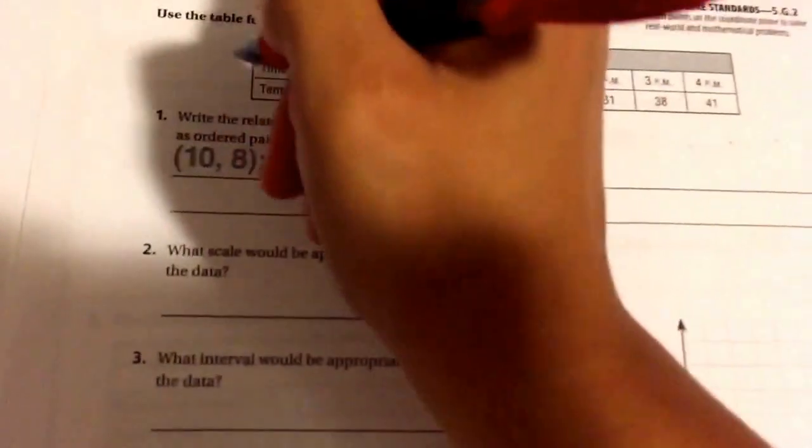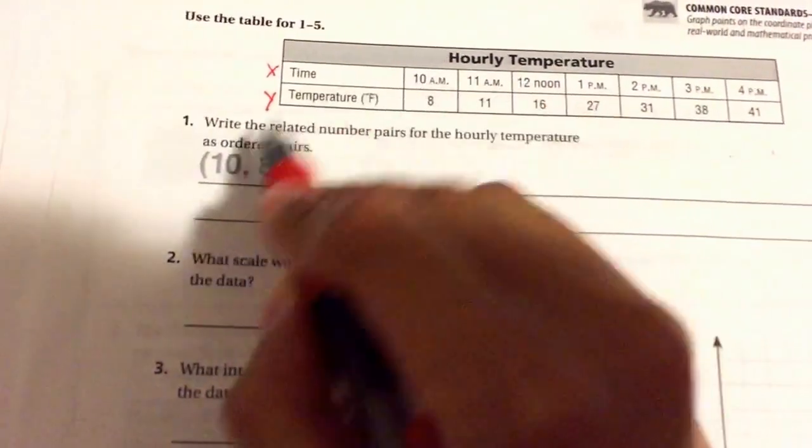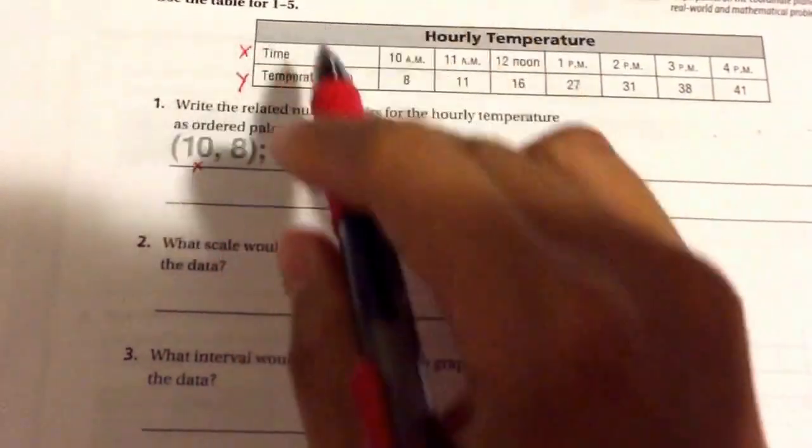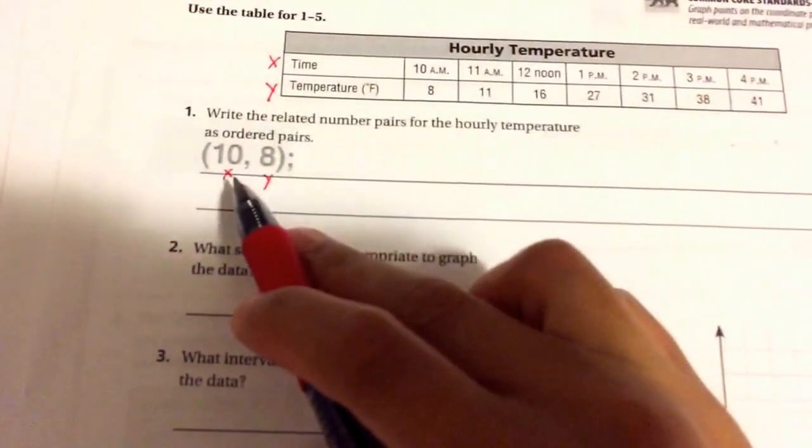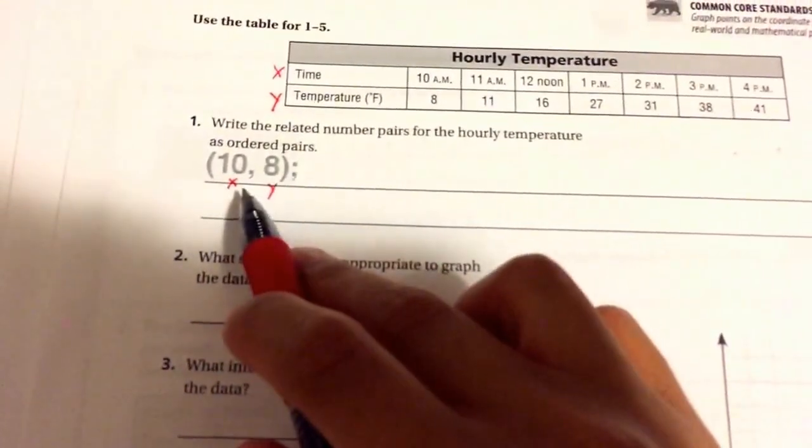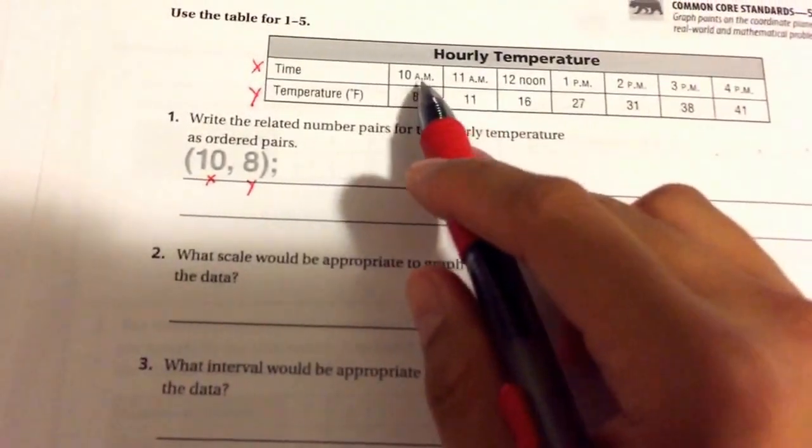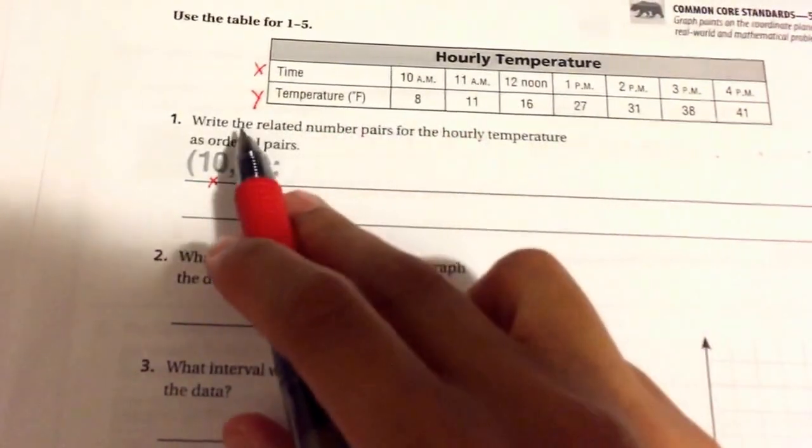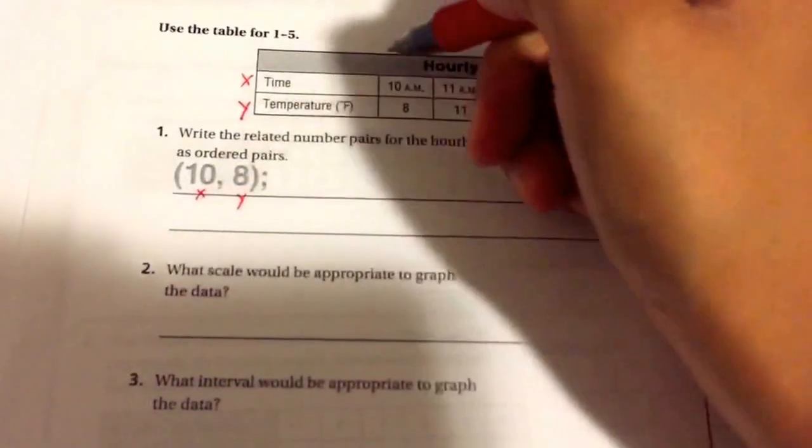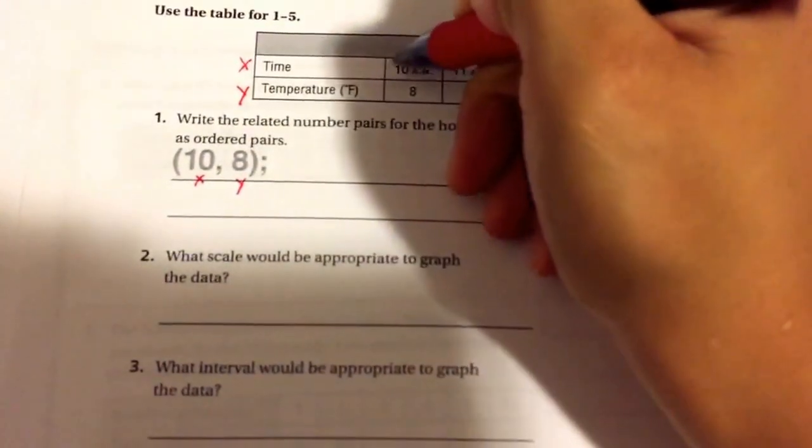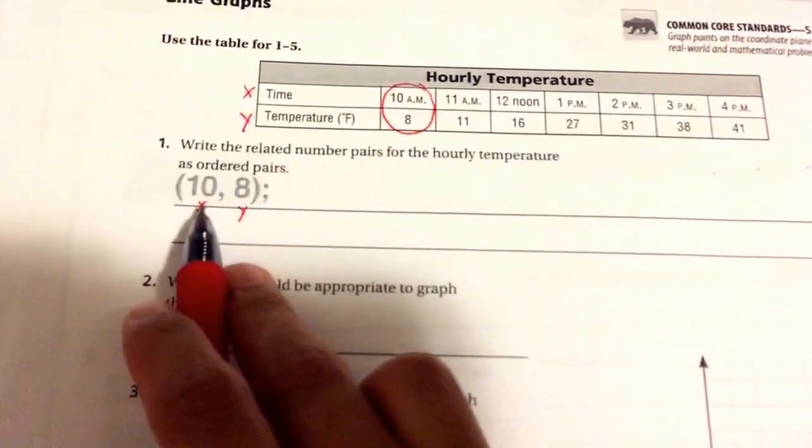The first thing they did was label their x and their y, and their x was their time, 10 a.m., and their y is the temperature. You can see when they did the x and the y, they put it in parentheses and a comma to indicate that it's an ordered pair. And they also took out the symbols, the a.m. and the degrees Fahrenheit. So for one, find the related number pairs for the hourly temperature as ordered pairs. We're going to take the one corresponding up and down, and this will be our x and this will be our y, 10, 8.